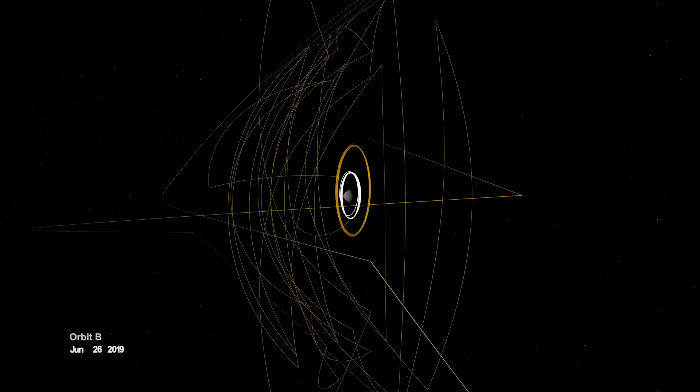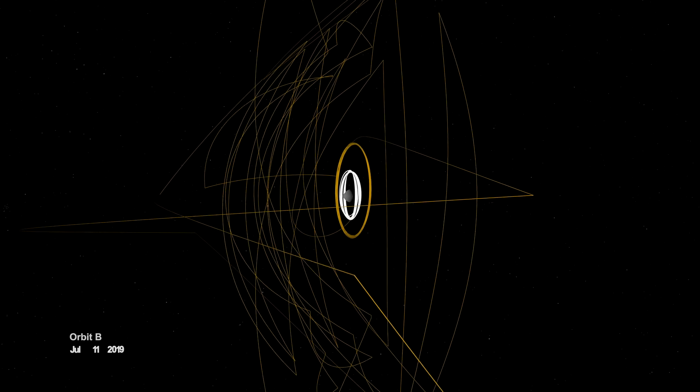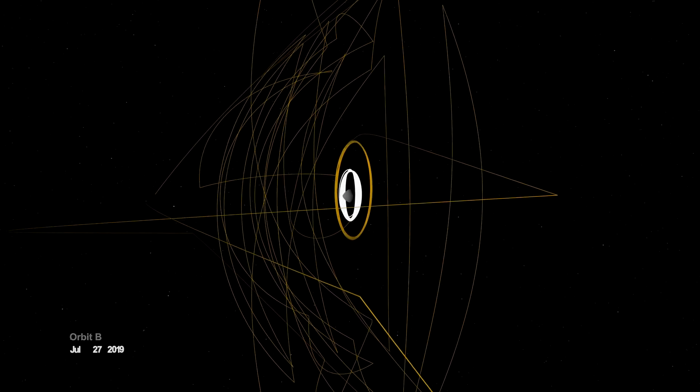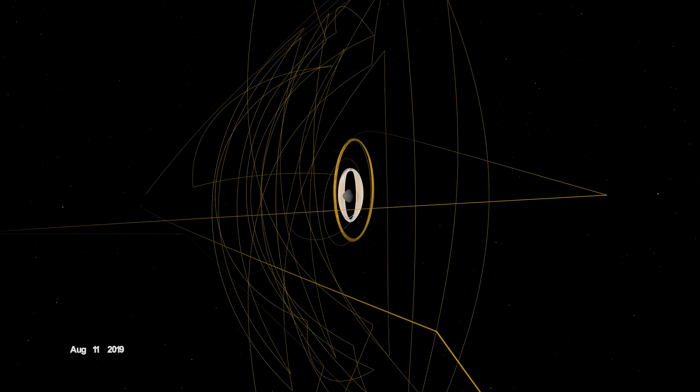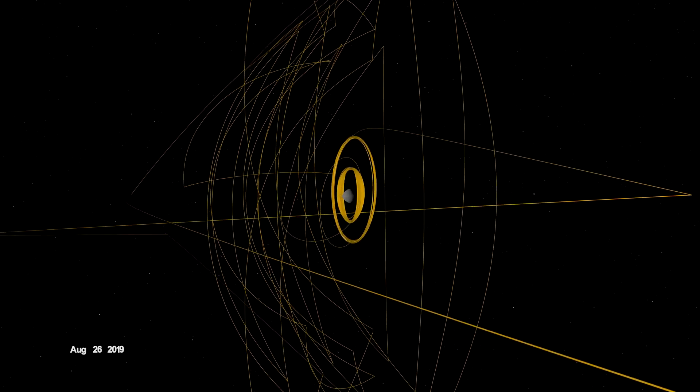On June 12, the spacecraft entered a new orbit at an altitude of just 680 meters, setting another record and establishing a home orbit for the remainder of the mission.